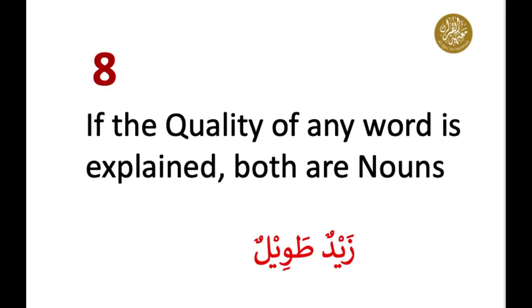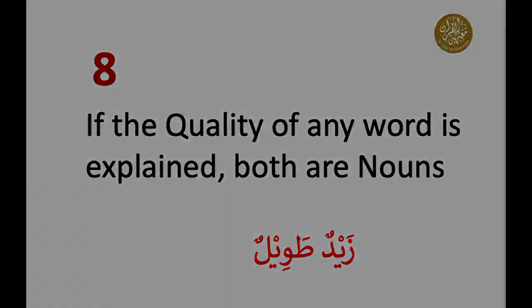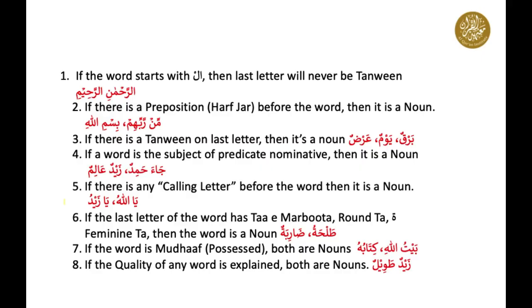Number eight: if there are two words side by side explaining the quality of the other, then both of them are nouns. For example, 'Zaidun tawilun' — tall Zaid — both of them are nouns. So from the above eight rules, inshallah you would be able to distinguish a noun in a sentence. Alhamdulillah.